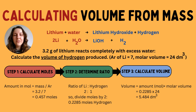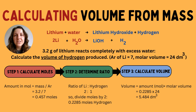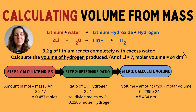Step three is to calculate the volume. Just as before, volume of gas equals moles times molar volume. So we do 0.2285 times 24, giving an answer of 5.484, which we round to 5.5 decimetres cubed. If you want to convert to centimetres cubed, multiply by 1000.